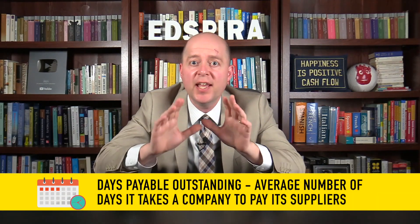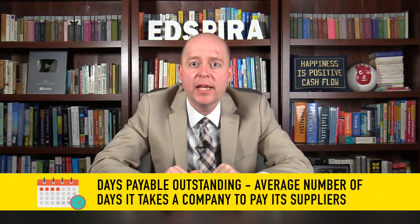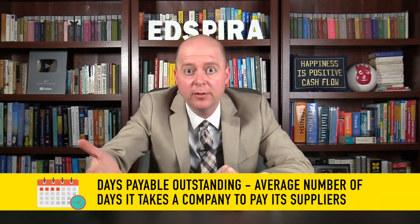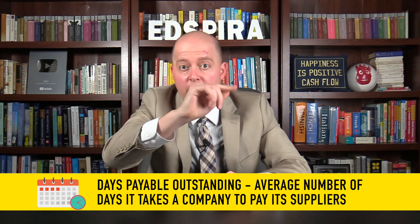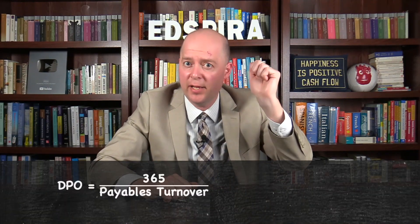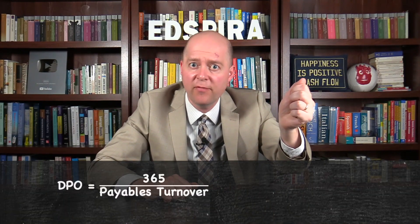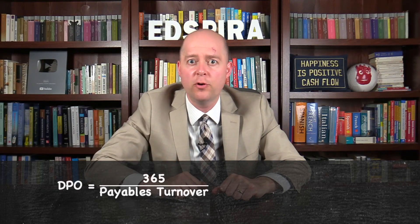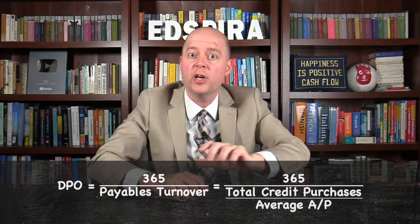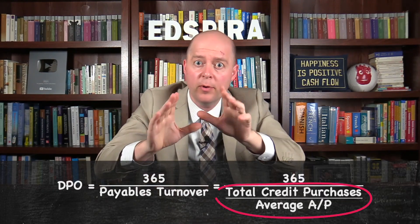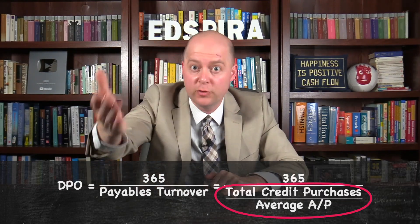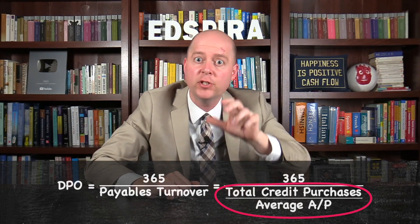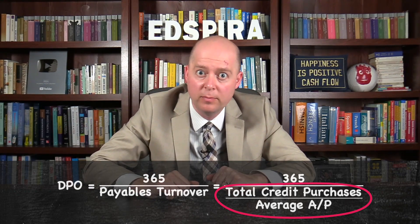Days Payable Outstanding is the average number of days it takes a company to pay its suppliers. It is calculated by dividing 365 by the company's payables turnover, where payables turnover is the total number of credit purchases from suppliers divided by the company's average accounts payable.